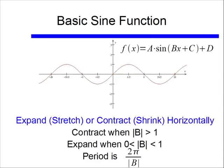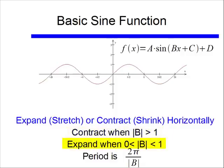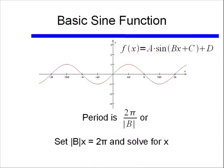In general, for f(x) = a·sin(bx + c) + d, when |b| > 1 we have a horizontal contraction, and when |b| is between 0 and 1 the function expands. The period equals 2π divided by |b|. My preferred method: take the bx term, set |bx| = 2π (since 2π is the normal period), and solve for x.